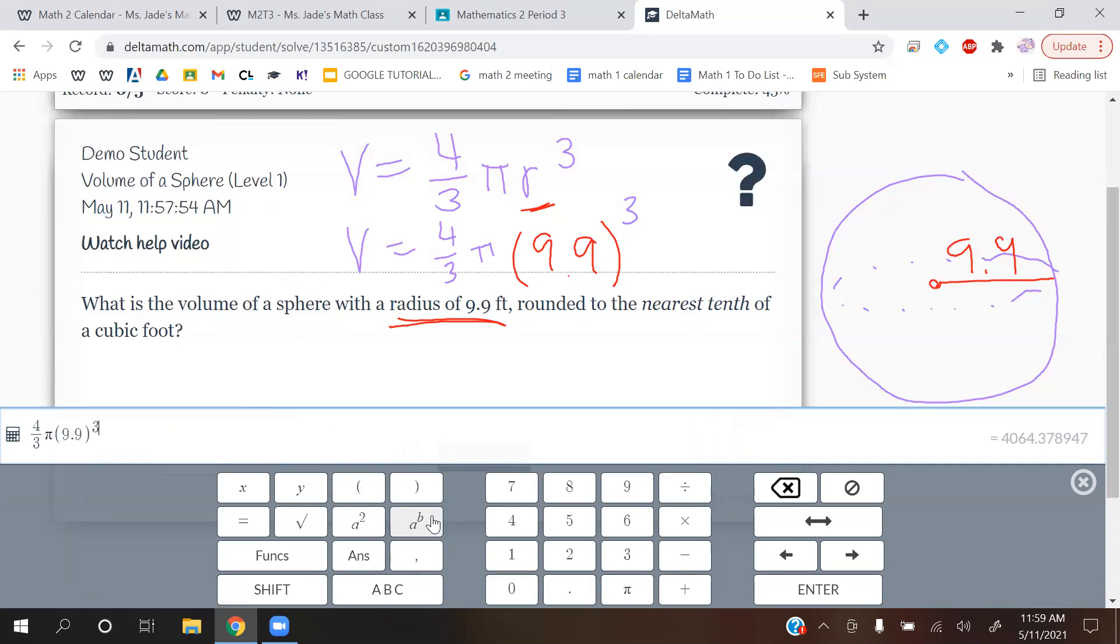So 4 thirds pi 9.9 cubed. That gives us 4064.37. Okay, so you're rounding it to the nearest tenth.